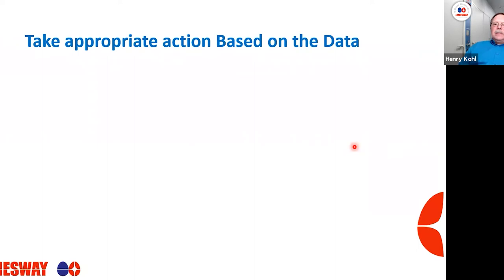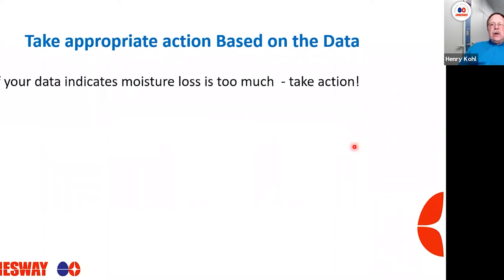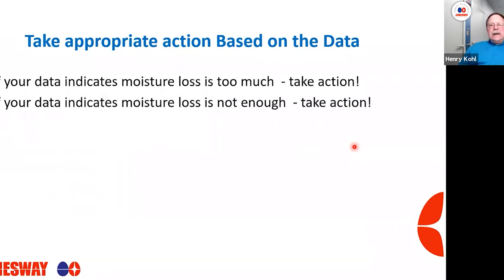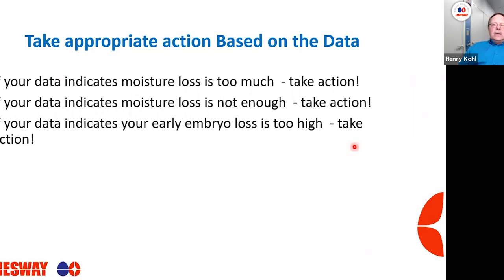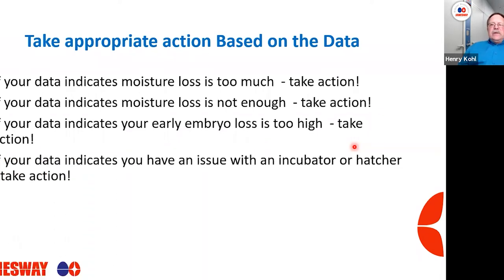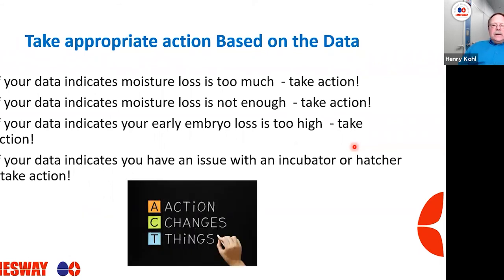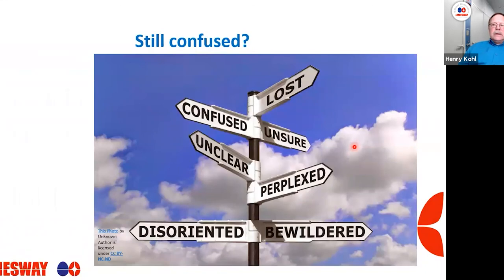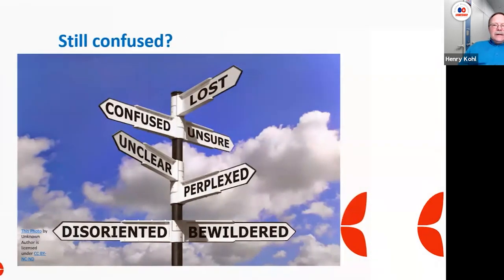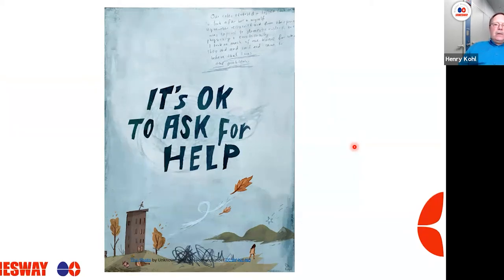You need to take appropriate action based on your data. If your data indicates your moisture loss is too much, take action. If it's not enough, do something about it. If you've got higher early embryonic loss, take action. If you have issues with your incubator or hatcher, do something about it — action is the only way things will change. If you're still confused, unsure, or unclear, it's okay to ask for help. You're more than welcome to get in touch with Jamesway, myself, Dr. Bramwell, Philip Perry, Bill Bennett, your hatchery salespeople — we'd be more than happy to help.